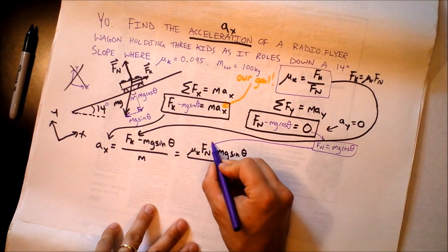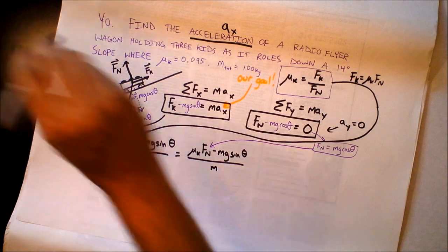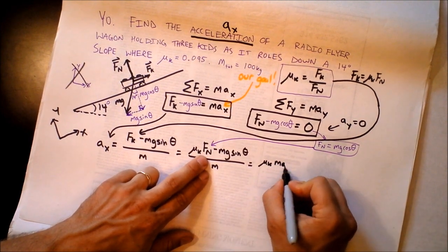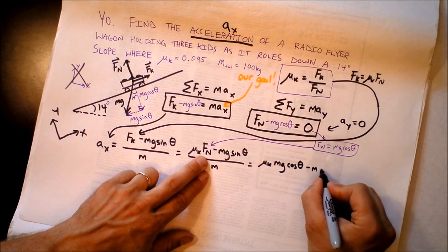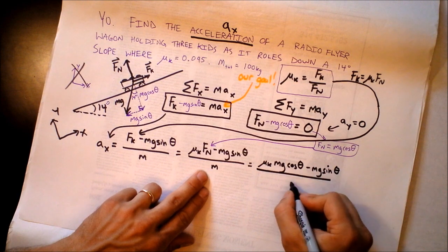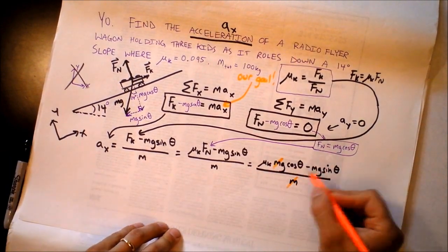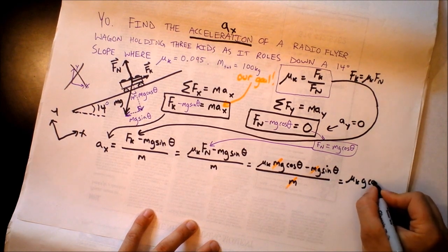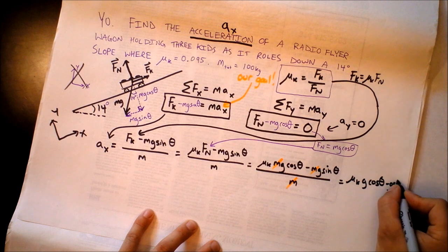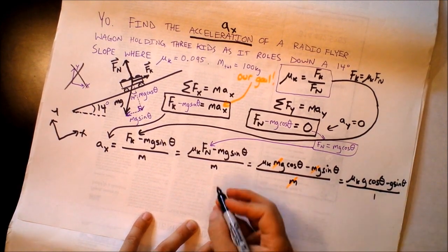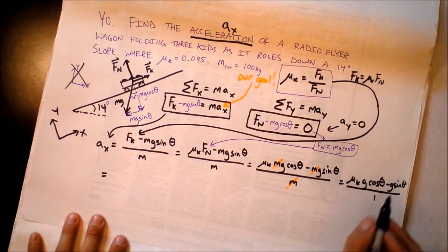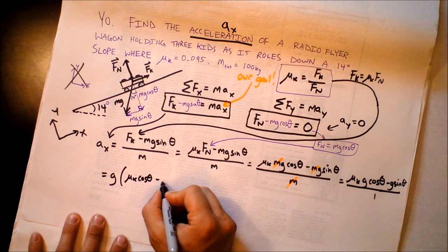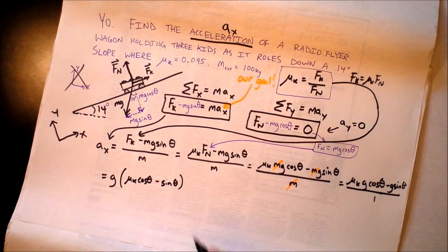So I'm going to take this equation and plug it in right there, and we will have a beautiful thing happen. I'm going to get mu sub k, and now instead of writing f sub n, I plug in m times g times cosine of theta minus m times g times sine of theta. And I'll divide it all by m. Let's write the answer out one more time. There's a g in both terms. I can factor it out, and I find that it's g times mu k cosine theta minus sine theta. That's our answer for the acceleration in the x direction.